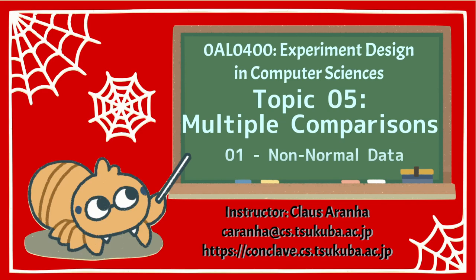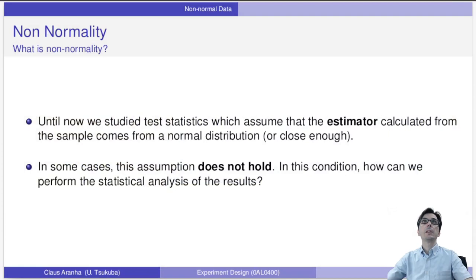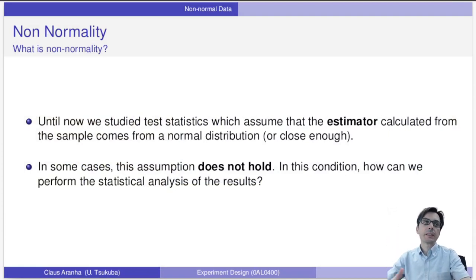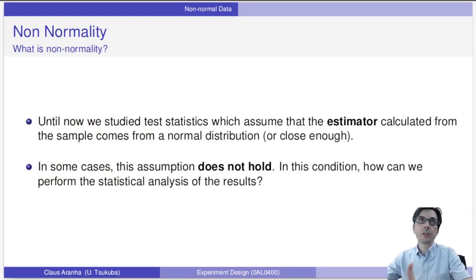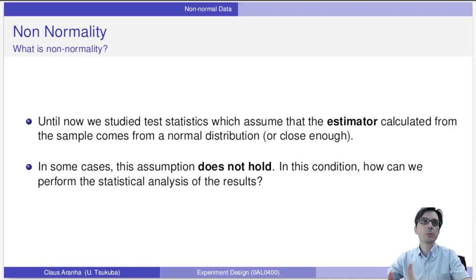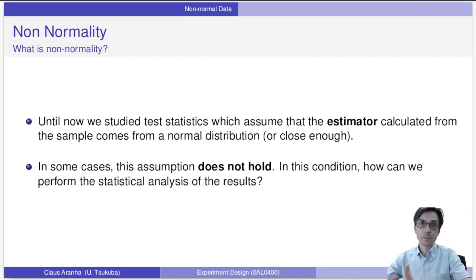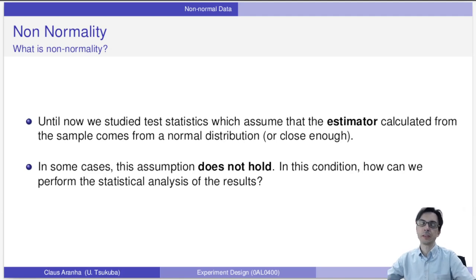So the idea of non-normality is that until now we studied test statistics which assume that the estimator — the variable under study, calculated from the sample — comes from a normal distribution or close enough. However, in some cases this assumption does not hold. When this happens, how can we perform the statistical analysis of the results?